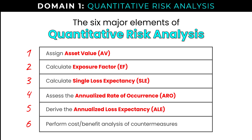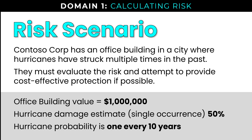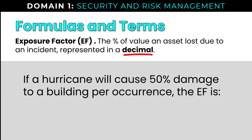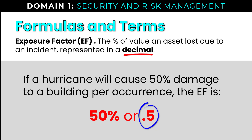We have those six major elements of quantitative risk analysis — let's start at the top. Asset value and exposure factor: these two numbers, asset value multiplied by the exposure factor, equal our single loss expectancy. The office building value is $1 million — that's our asset value (AV). The hurricane damage estimate per single occurrence is 50% — that is our exposure factor. Exposure factor should be represented as a decimal, so 50% becomes 0.5, and 100% would be expressed as 1.0.